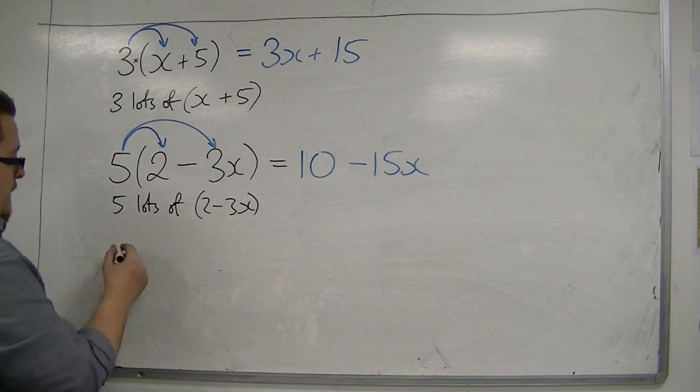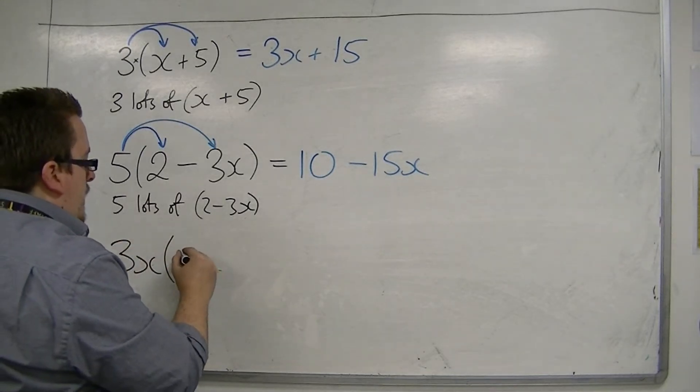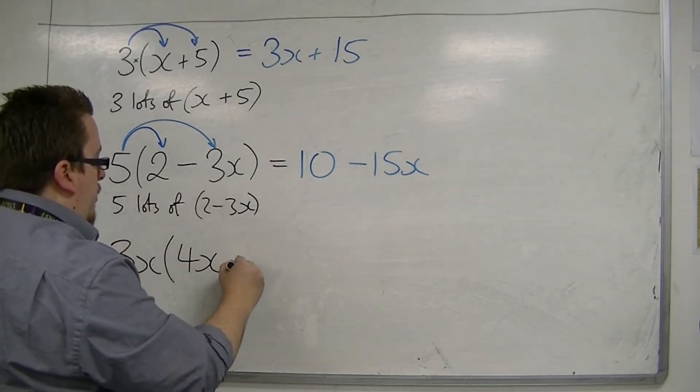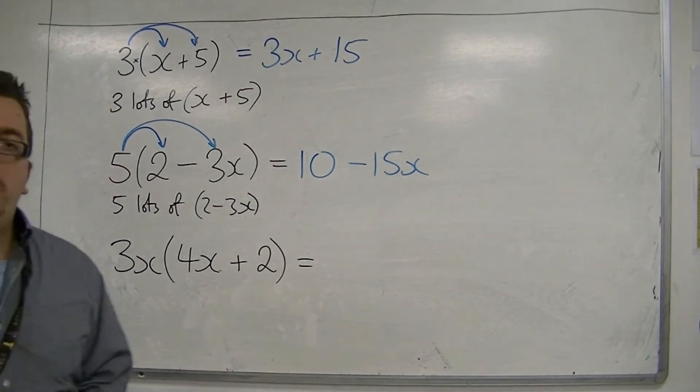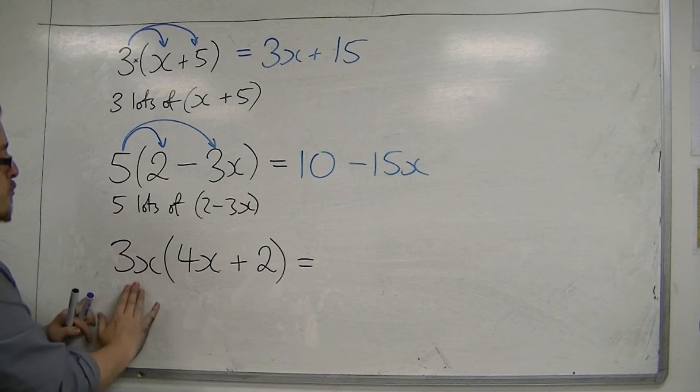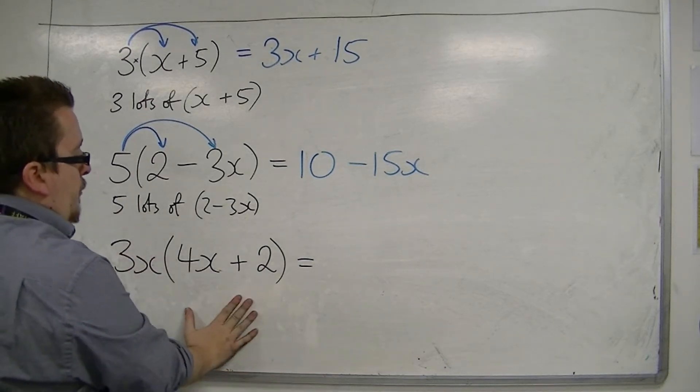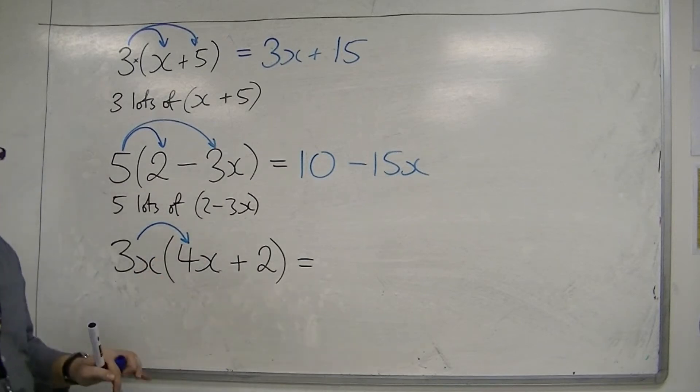Let's look at another one. Let's look at if I had something like 3x, 4x plus 2. Okay? This looks absolutely horrible. It looks completely different. But it's not. It works in exactly the same way. This means I've got 3x lots of 4x plus 2. So I'm multiplying the 3x by whatever's inside the bracket.